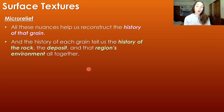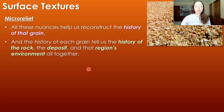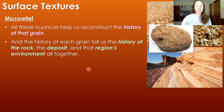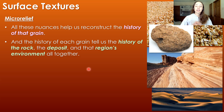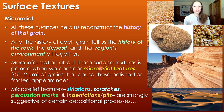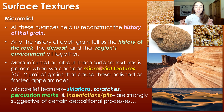All these minute details of polish versus frosting help us understand the history of a grain, which tells us the history of the rock, the deposit, and ultimately the region's environment. We can also look at micro relief features. Beyond polish and frost, there are features like striations, scratches, percussion marks, and pits or indentations that are also important for understanding the history of deposits.